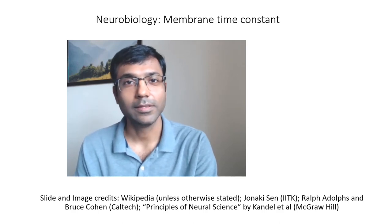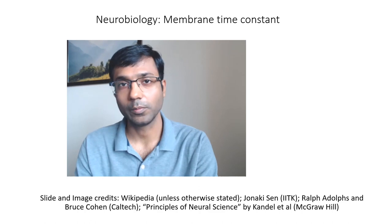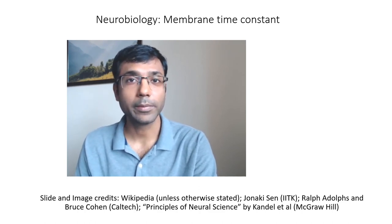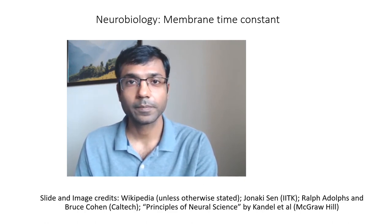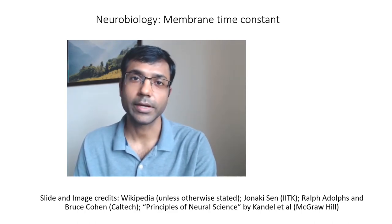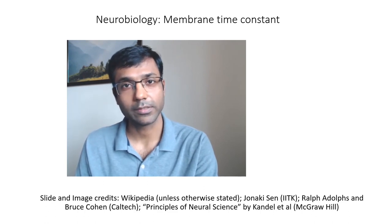Hi everyone. In this series of videos we have been looking at various electrical properties of neurons. In the last video we saw how the membrane potential can be measured and how it can be manipulated by injecting current. If you inject positive current into a neuron you can make the membrane potential more positive, and if you inject negative current you can make it more negative or hyperpolarized.